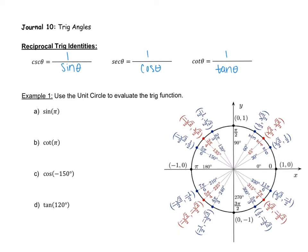Let's first brush up on our skills for evaluating with the unit circle. The unit circle provides us values that are helpful for evaluating trig functions. We have sine of pi, and pi is our angle. So we go to pi, and sine is always the y value of the coordinate. My y value at pi is zero, so sine of pi equals zero.